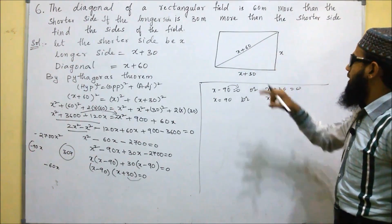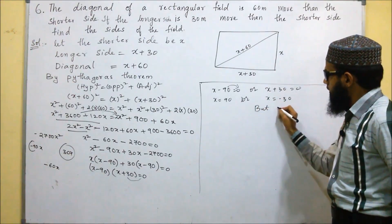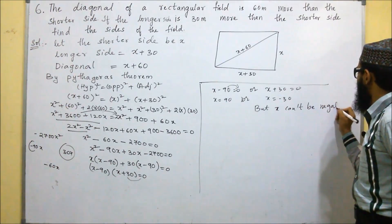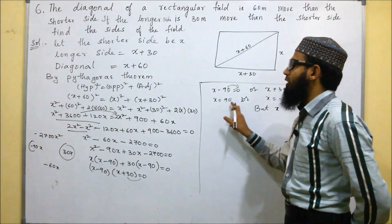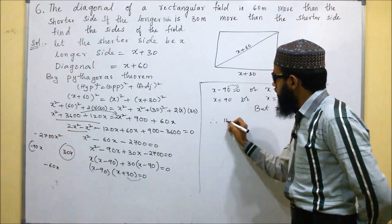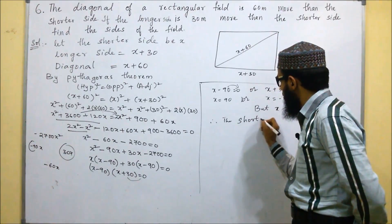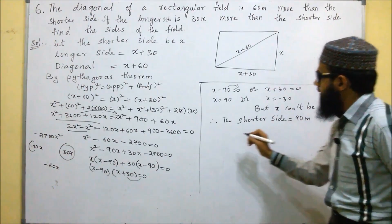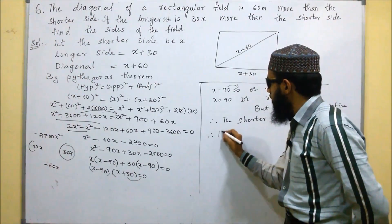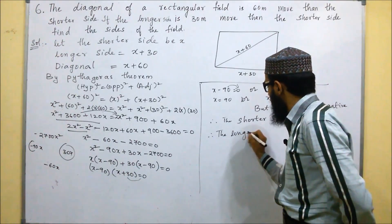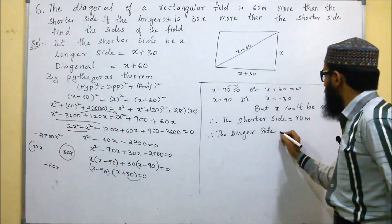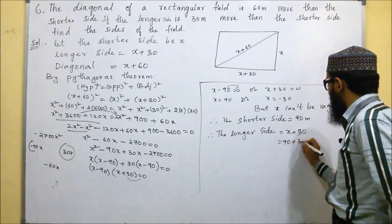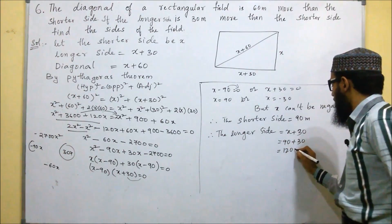Since x cannot be negative, therefore the shorter side is x equals 90 meters. The longer side is x plus 30, that is 90 plus 30, which equals 120 meters.